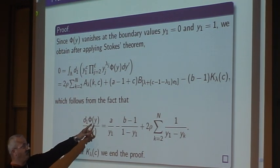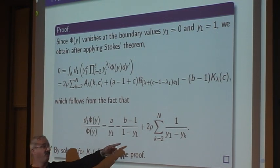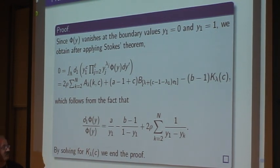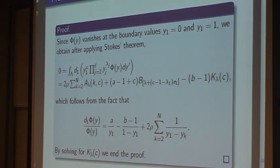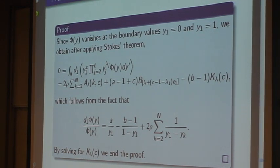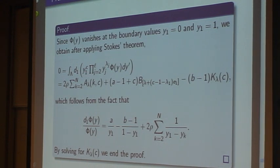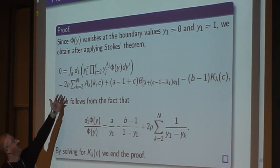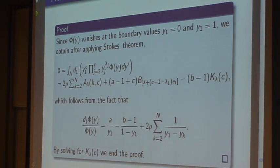On y_1, with respect to y_1, I get this formula up to the factor of φ(y). And if I use it carefully with Stokes' theorem, I get 0 from one side, and on the other side, I can calculate by these integrals. Then solving this equation in terms of K_λ(c), we get exactly what we want.